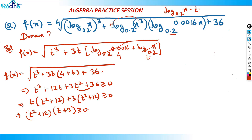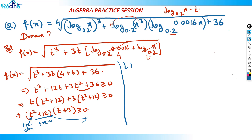Now, t squared plus 12 is always positive — t squared is always a non-negative number, and plus 12 makes it strictly positive. So since t squared + 12 is always positive, I can divide both sides by it, which gives t + 3 greater than or equal to 0. That means t is greater than or equal to minus 3.